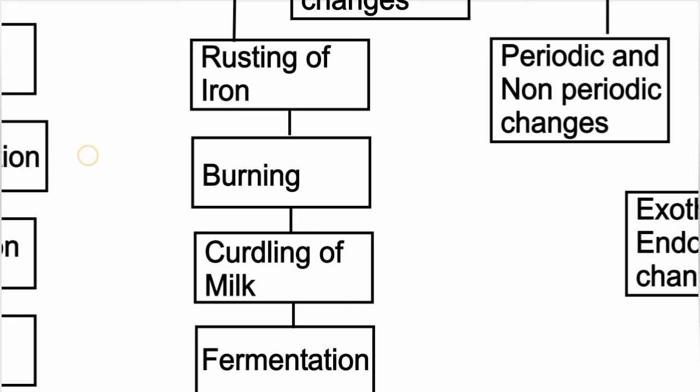Cooking food is also given as an example of a chemical change, indicating how chemical change occurs in everyday life.